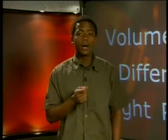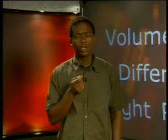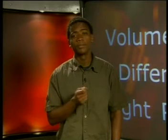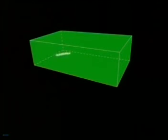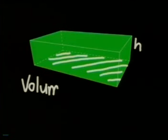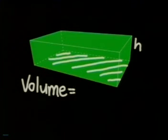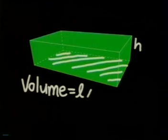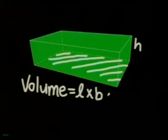Do you remember what the formula is for the volume of a right rectangular prism? It is the area of the base, which is a rectangle, multiplied by the height. Since the area of a rectangle is length times breadth, the formula for the volume of a right rectangular prism is equal to length times breadth times height.